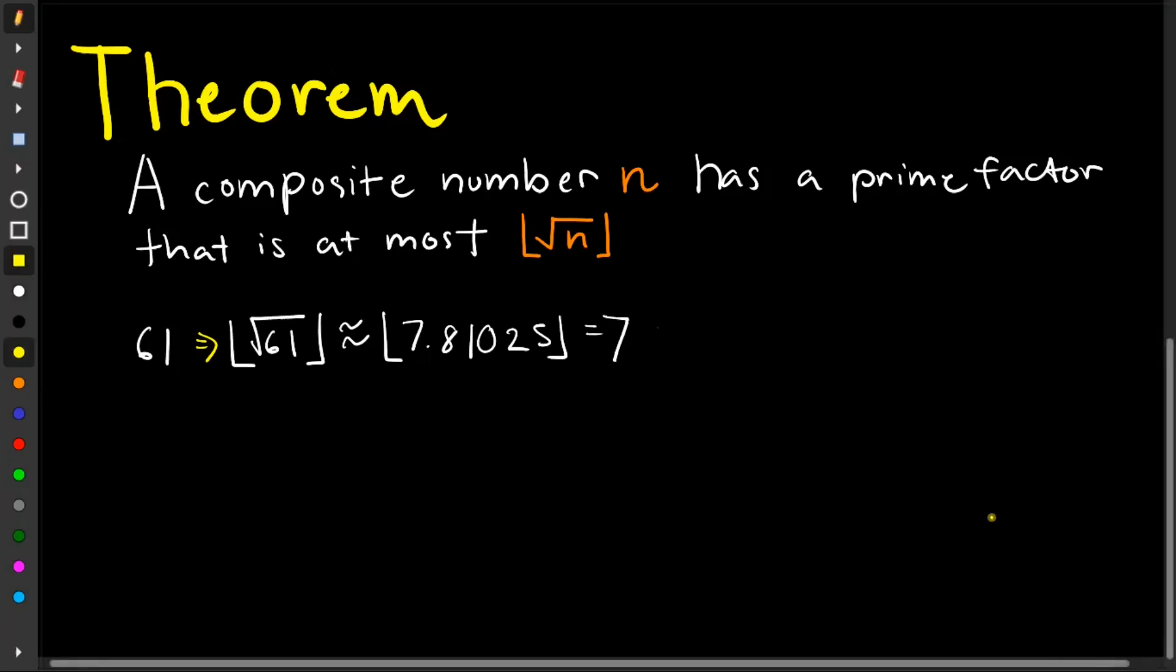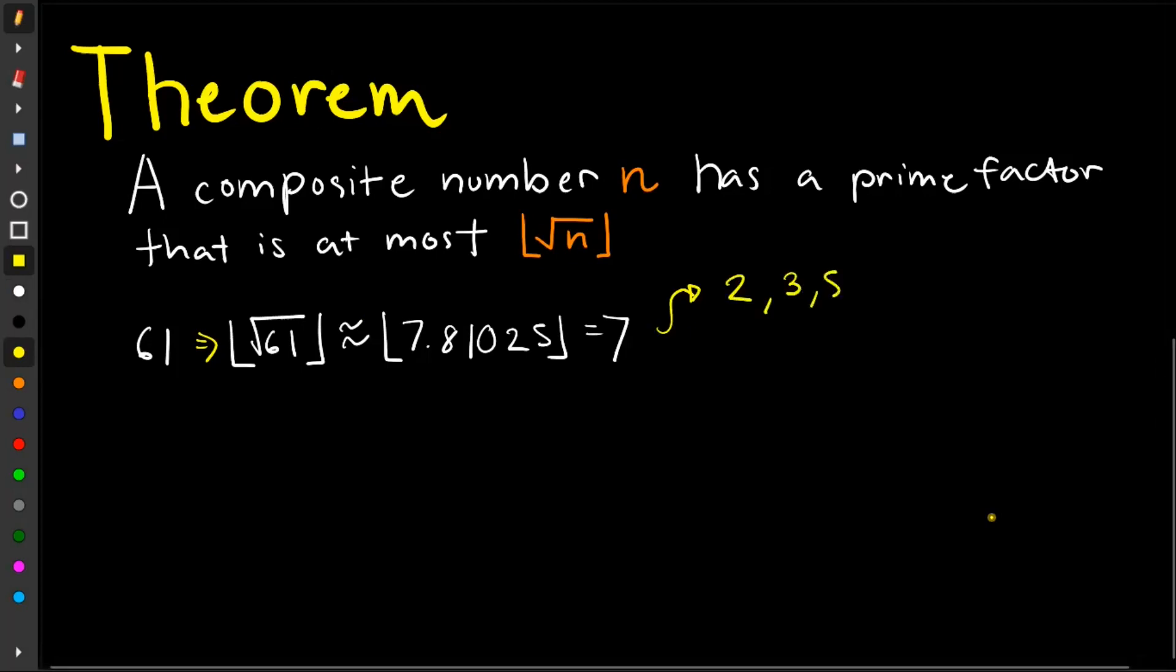So the prime factors that are at most 7 are 2, 3, 5, and 7.